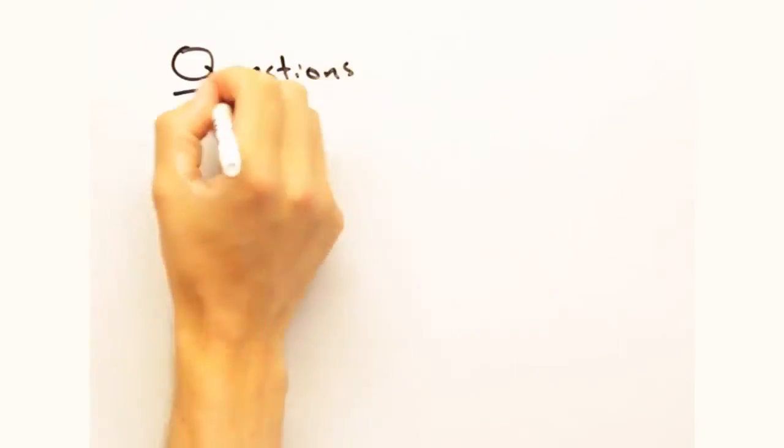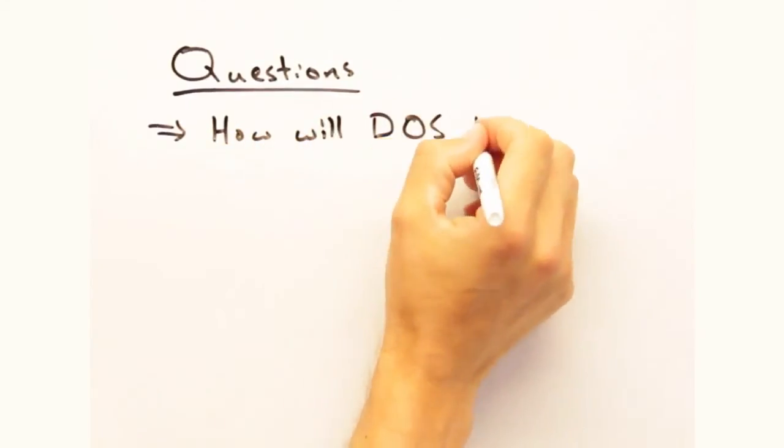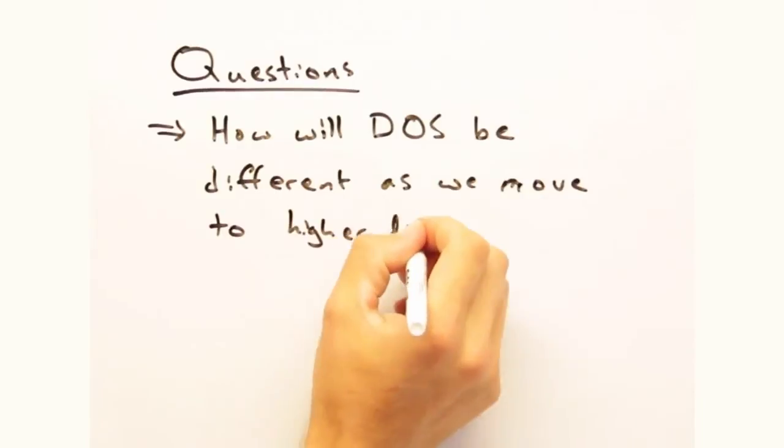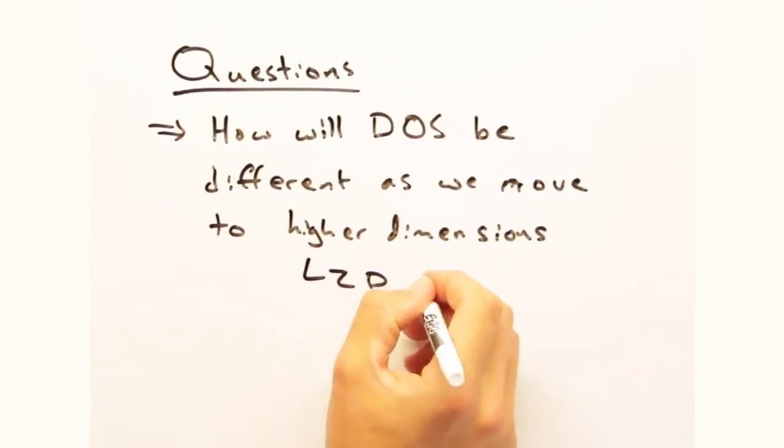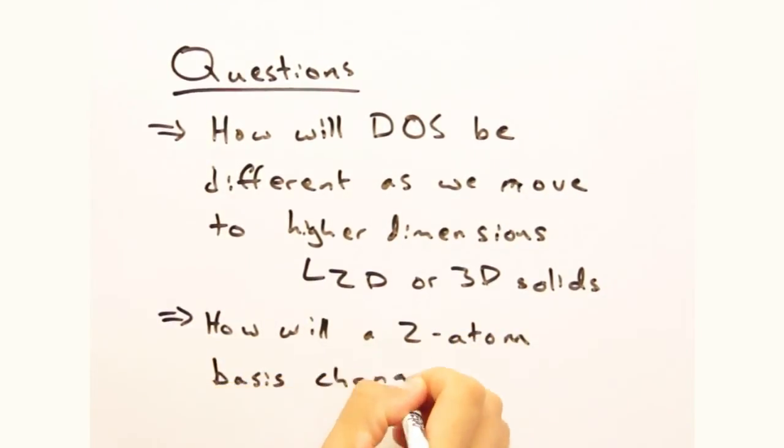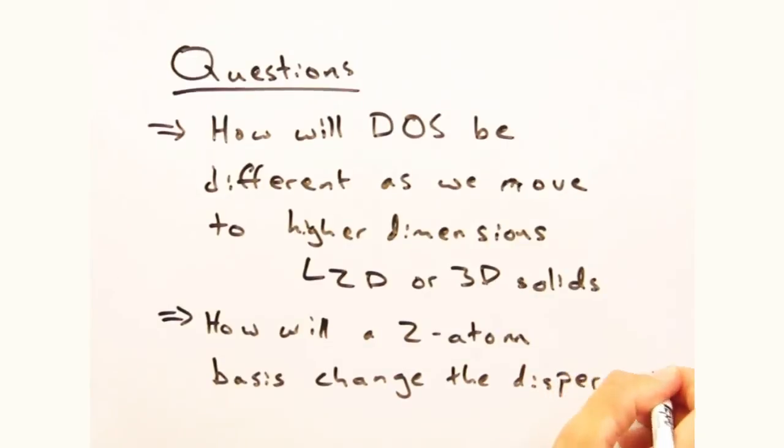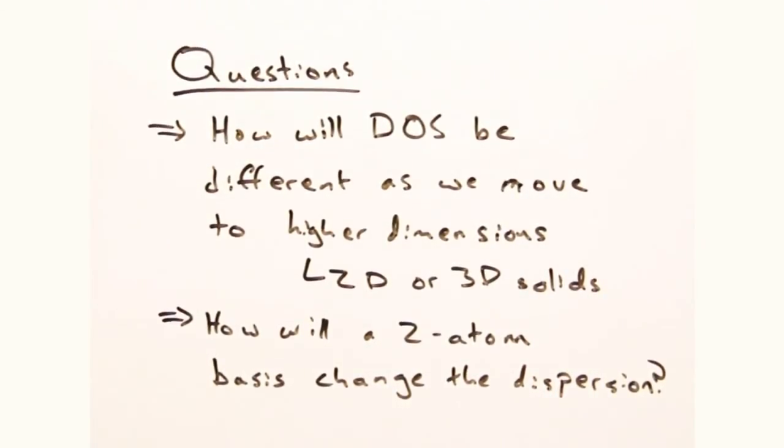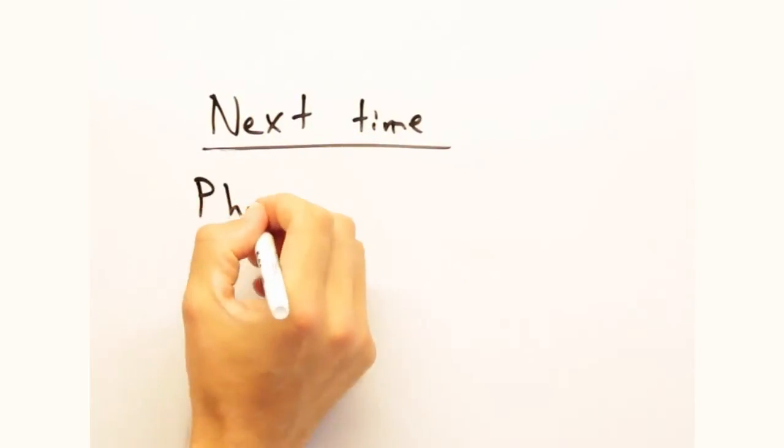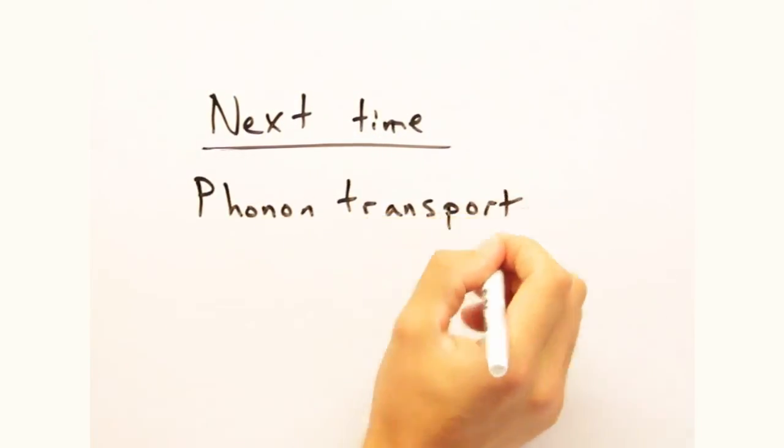As always, we have some questions for you at home. Today we focused on the 1D case, but density of states can easily be carried into multiple dimensions. How would you expect it to be different if we were looking at a 2D or a 3D solid? Second, we made all of these assumptions assuming one atom on each lattice point. How would a 2 atom basis change the density of states if it does at all? Next week we're going to be talking about phonon transport and phonon properties. Thanks for watching Solid State Physics in a Nutshell. See you later.